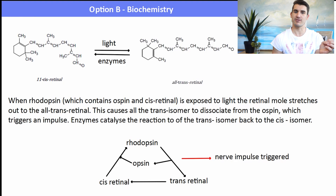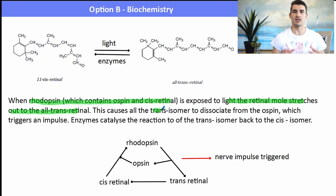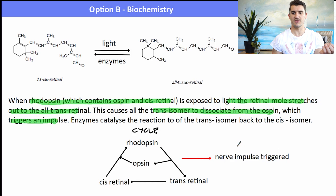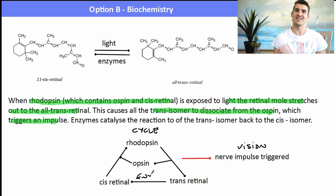The light reacts with the cis retinal and stretches it out to form the trans form due to the double bond. When rhodopsin - which contains opsin and cis retinal - is exposed to light, the light stretches out the retinal molecule to trans retinal. This causes the isomer to dissociate from the opsin, which triggers an impulse - and that impulse is what we perceive as light. So rhodopsin with light releases opsin and trans retinal, triggering a nerve impulse in our brain. Enzymes then catalyze the reaction back to the cis branched form, it relinks with the opsin and is converted back into the initial protein, and this cycle repeats, allowing us to see light over and over again.